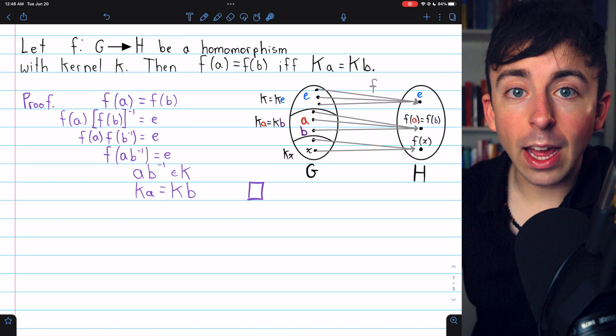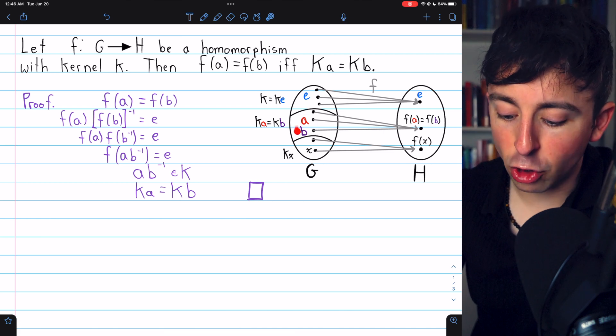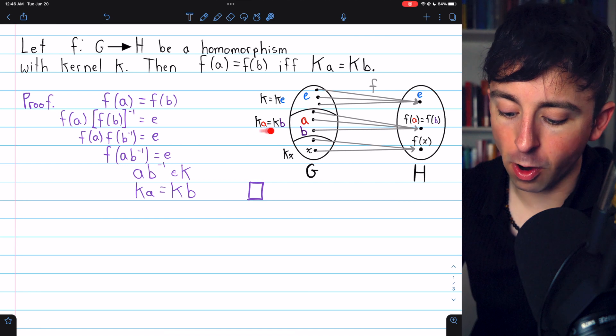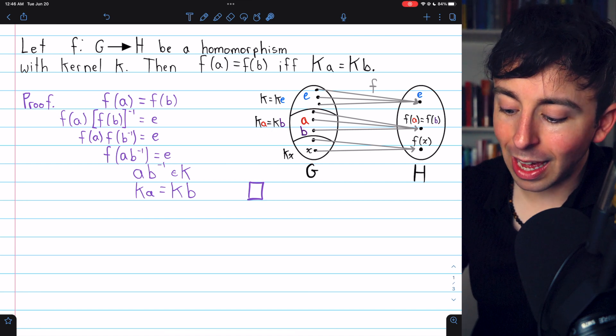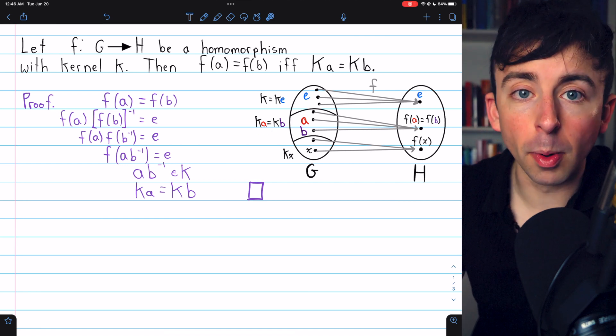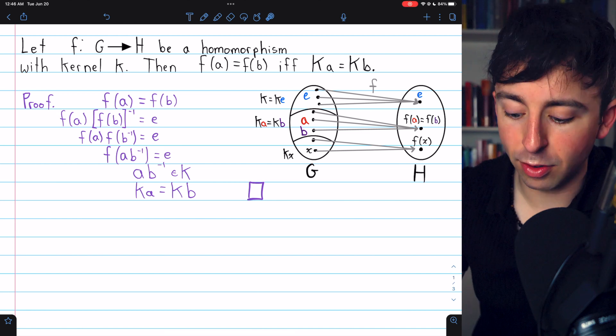And we just proved if you take any two elements from the same coset, a and b here are from the same coset, they will have the same image under the homomorphism, and the converse is true as well.